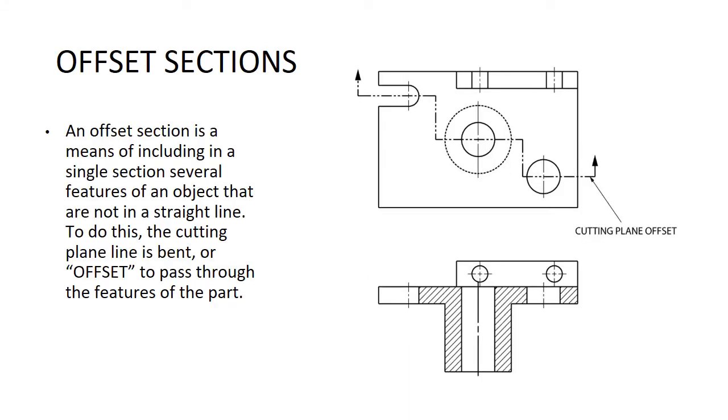Here's an offset section. An offset section is a means of including in a single section several features of an object that are not in a straight line. To do this, the cutting plane line is bent or offset to pass through the features of the part. We go in and slice our apple kind of at a jigsaw or a zigzag through that guy. That's why we call this an offset cutting plane, because it's not a straight line, we're kind of picking and choosing what we want to cover up.